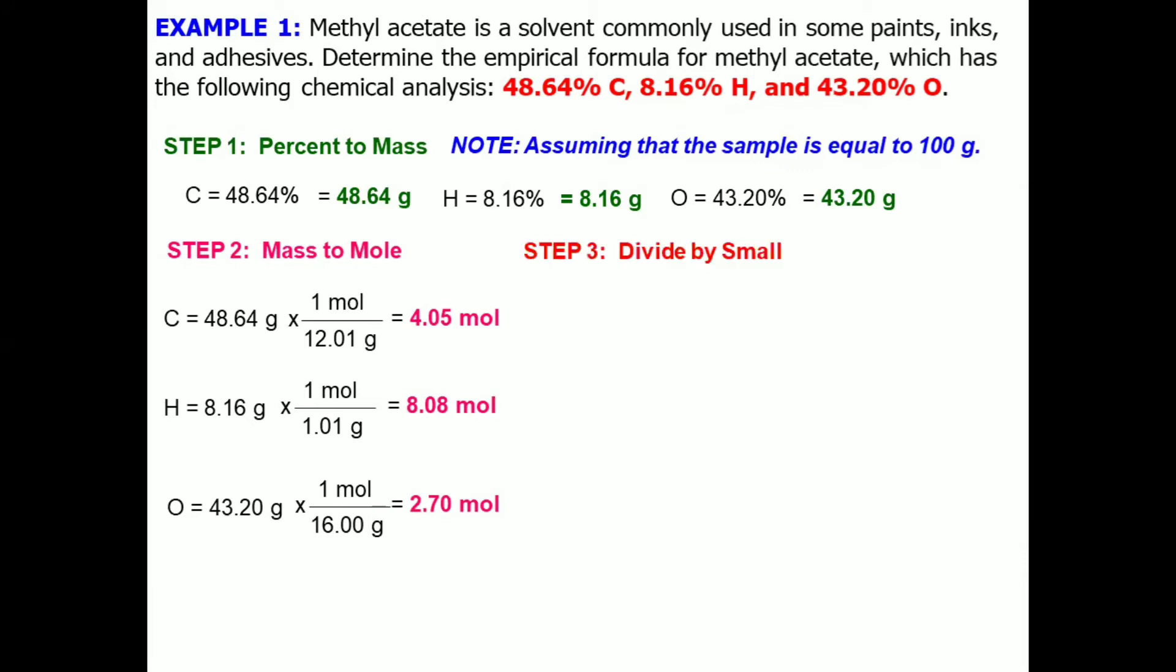Let's have step number three: divide by small. The small there refers to the smallest answer or smallest mole that can be found from the answer in step number two. And the smallest there is 2.70 mole. With that, we will use this value to divide all the computed or calculated moles.